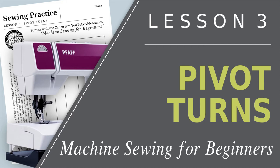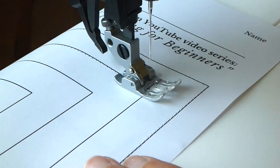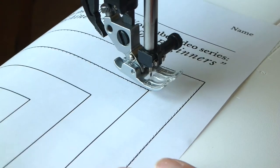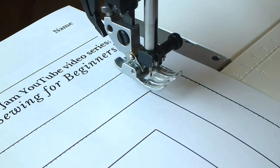Welcome to lesson three of machine sewing for beginners. In this lesson you will be practicing pivot turns, which are used to sew sharp corners like the corner of a pillow or a back pocket on a pair of jeans.